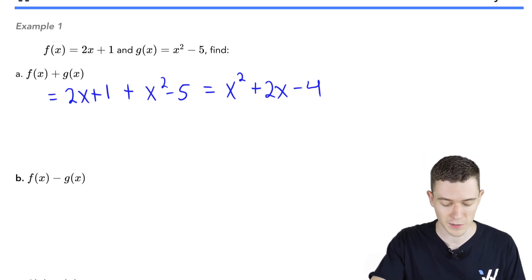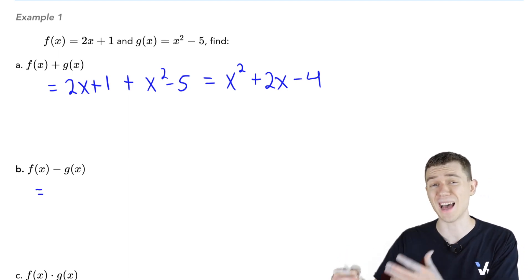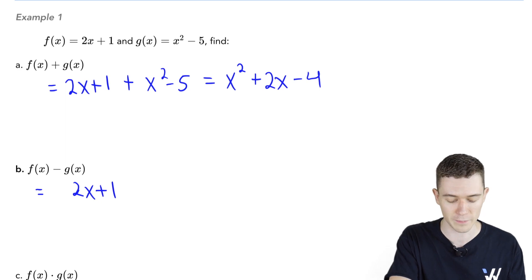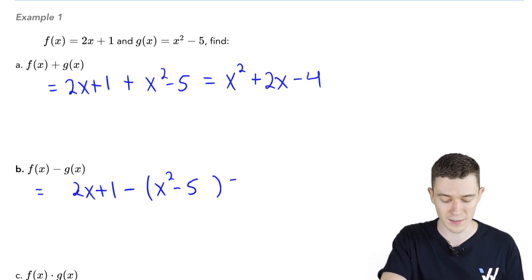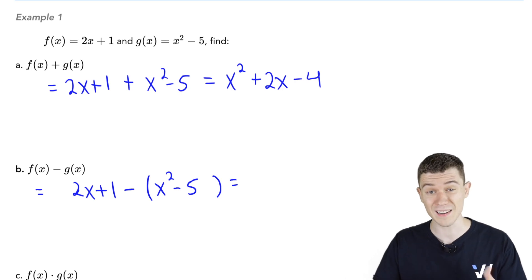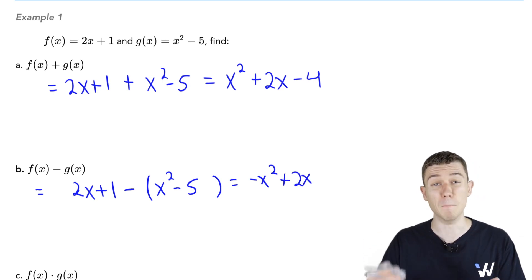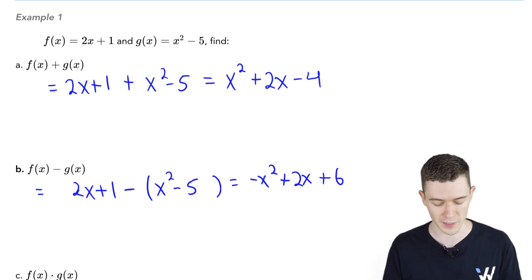Very similar for f minus g. The only thing we really have to remember here is that we're subtracting the entire g function. We need to put that in parentheses when we subtract. So we have 2x plus 1, that's our f function, and we're subtracting g. We're subtracting all of g in parentheses. So now when we subtract this, we're going to have minus x squared, that would be the first thing to come out of that parentheses, and then we'd also have that 2x again. Now we have 1 minus minus 5, that's 1 plus 5, or 6. And this is our function, f minus g.